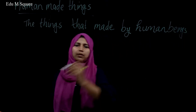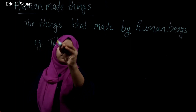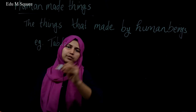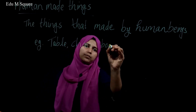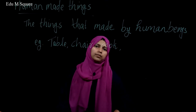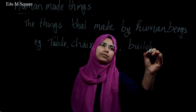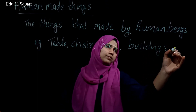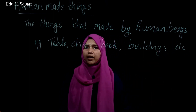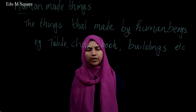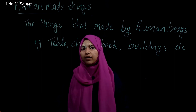Examples: table, chair, book, then buildings, etc. These things are made by human beings, so they are known as human-made things.